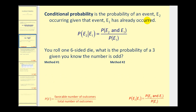Conditional probability is the probability of an event E2 occurring given that event E1 has already occurred. The probability of E2 given E1 is equal to the probability of E2 and E1, divided by the probability of E1.